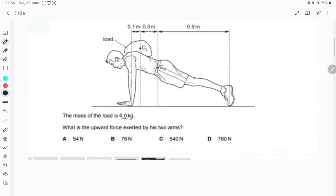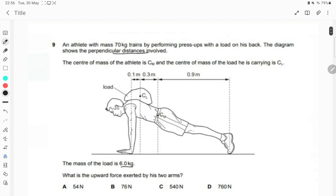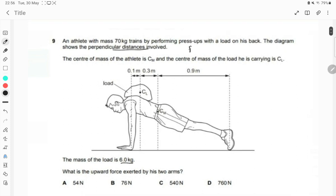Okay, the center of mass of the athlete is CM and of the load is CL. The mass of the load is 6 kg. So if you remember, the question is of moment and the formula for moment is force into perpendicular distance. Perpendicular distance is given, force is not given. Force basically over here is the weight, and we know the way to convert mass to weight, right? So weight is mass into gravity.